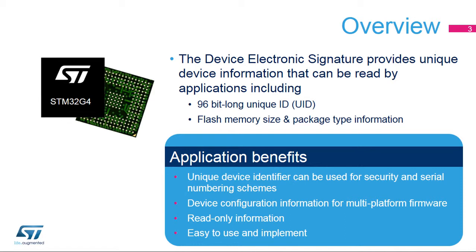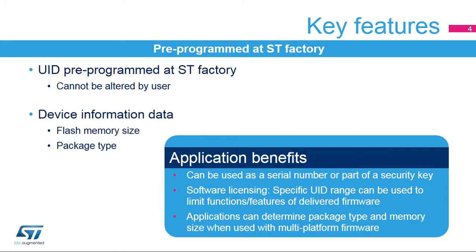Applications can benefit from a unique identifier that can be used as a serial number or as part of a security key. It can also be used to manage software distribution and licensing features based on the UID. The unique identifier and other device information are pre-programmed at the ST Factory and cannot be altered by users.